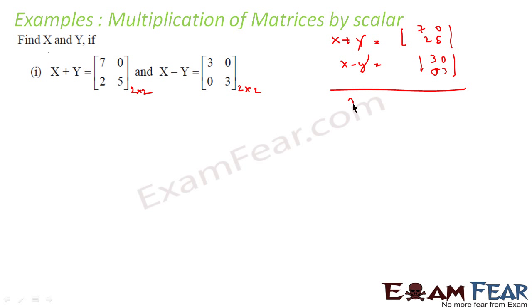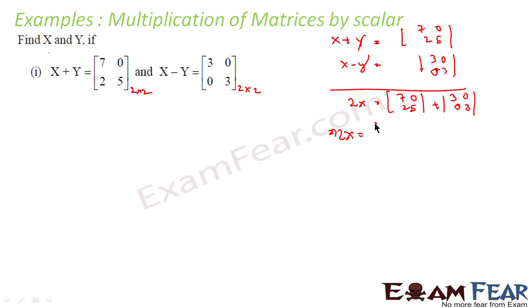So what we get: 2X is nothing but [7 0; 2 5] plus [3 0; 0 3]. Adding element-wise: 7+3=10, 0+0=0, 2+0=2, and 5+3=8. This is the value of 2X. So X is nothing but 1/2 into [10, 0, 2, 8], which gives us [10/2, 0/2, 2/2, 8/2].